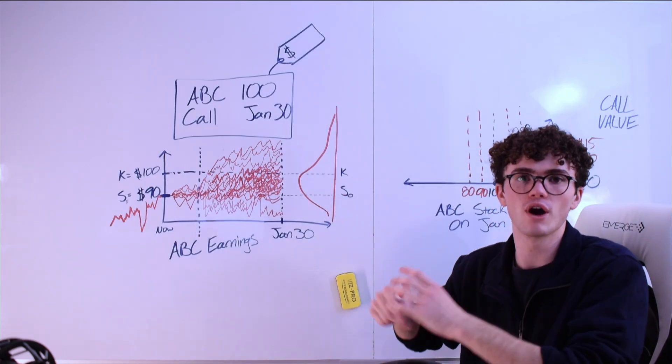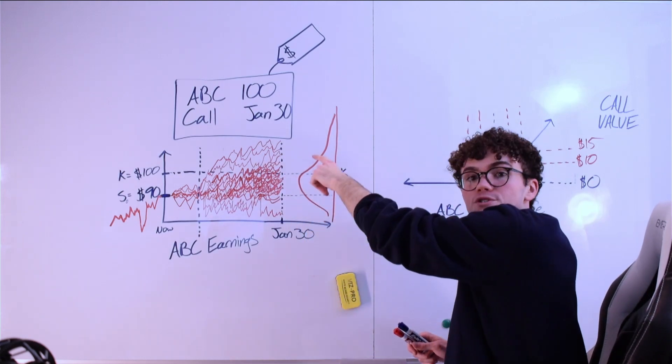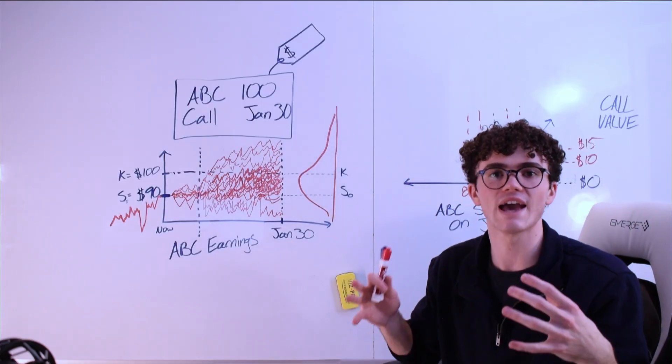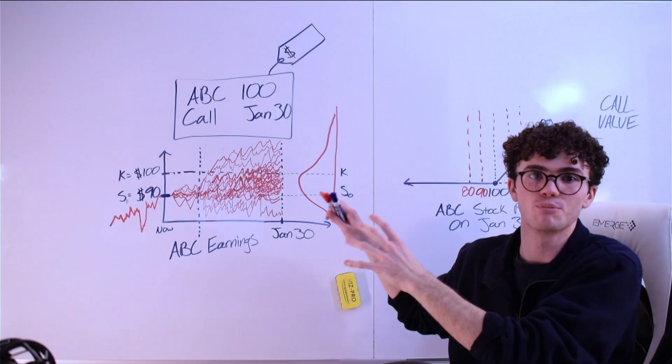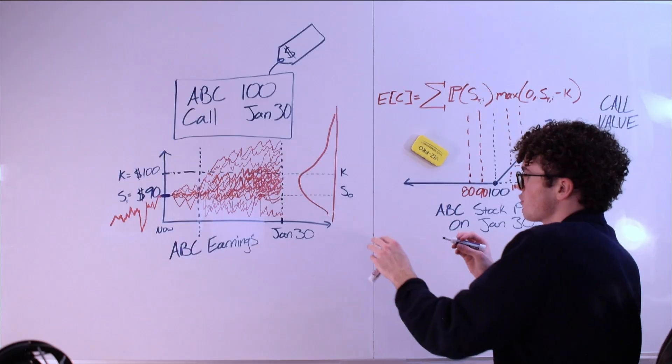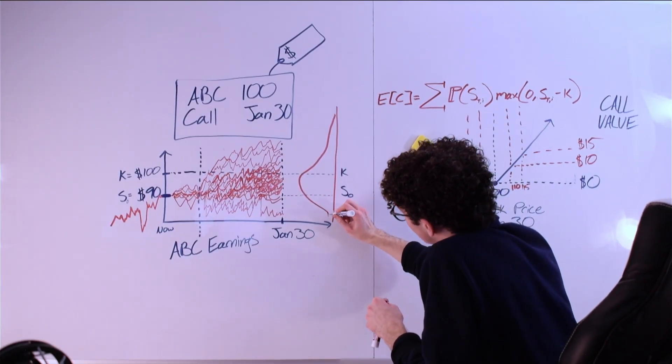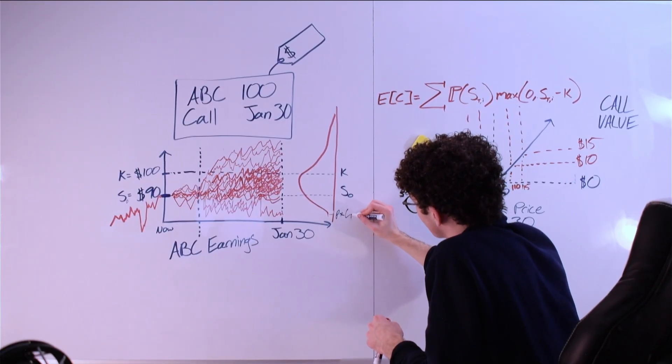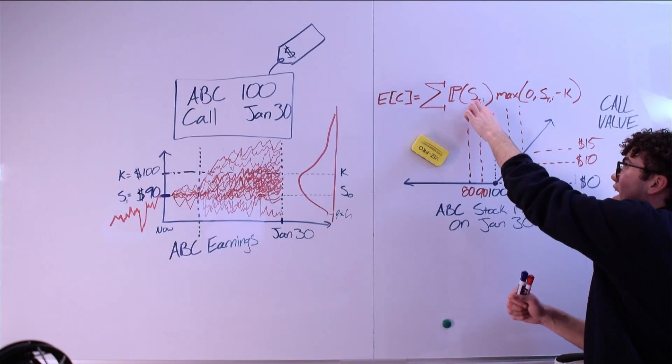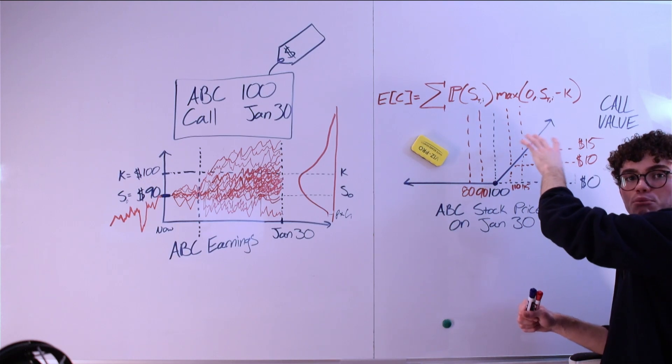If we replayed this scenario a million times and maybe one time the contract becomes worth $25, once $50, a hundred times zero dollars, 20 times $10. What's the average value of the contract if we repeat this experiment a million times? To find the expected value of the ABC option at expiration, we just have to come over to every possible outcome for the price of ABC at expiration and take its probability times the price of the call in that event.